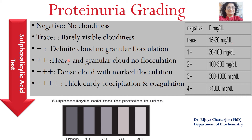A single plus sign indicates a definite cloud with no granular flocculation, where the concentration is between 30 to 100 milligrams per deciliter. Two plus signs indicate a heavy and granular cloud, with a protein range of 100 to 300 milligrams per deciliter. Three plus signs indicate a dense cloud with marked flocculation, in the range of 300 to 1000 milligrams per deciliter.